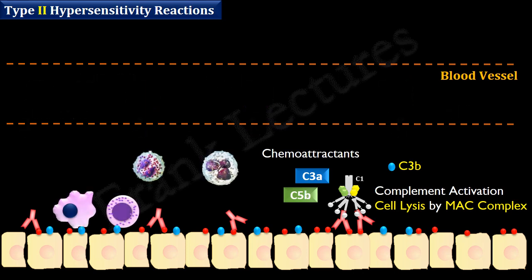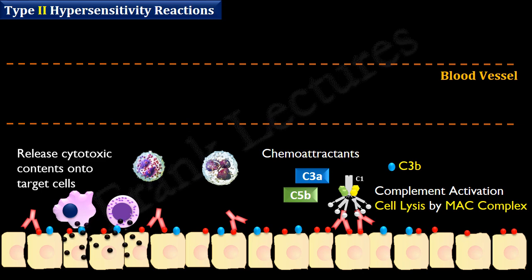Since the target cells are part of a tissue, phagocytosis is not possible. Therefore, phagocytes such as macrophages and natural killer cells release their cytotoxic contents onto the target cells, causing additional tissue damage.